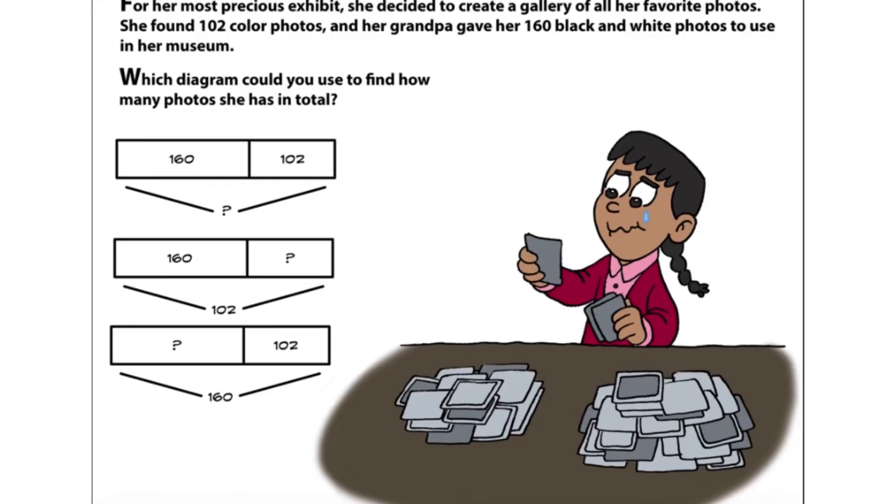For her most precious exhibit, she decided to create a gallery of all her favorite photos. She found 102 color photos, and her grandpa gave her 160 black and white photos to use in her museum. Which diagram could you use to find how many photos she has in total?